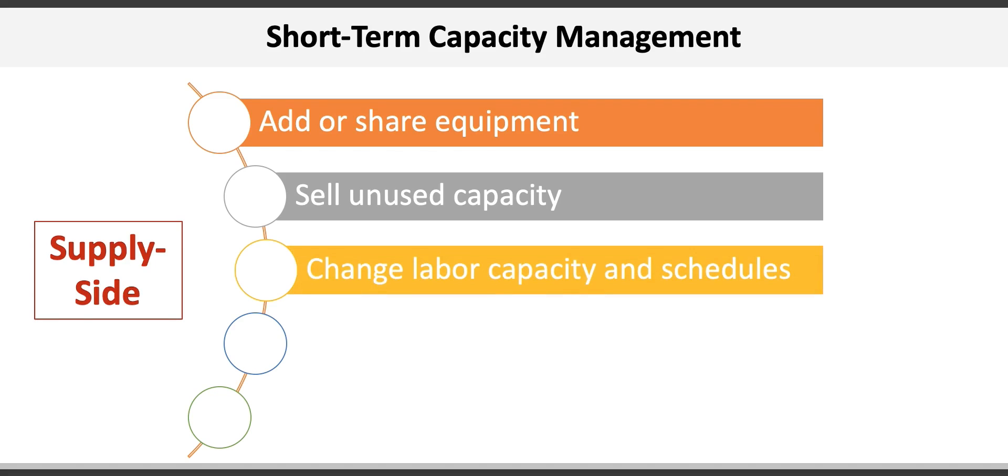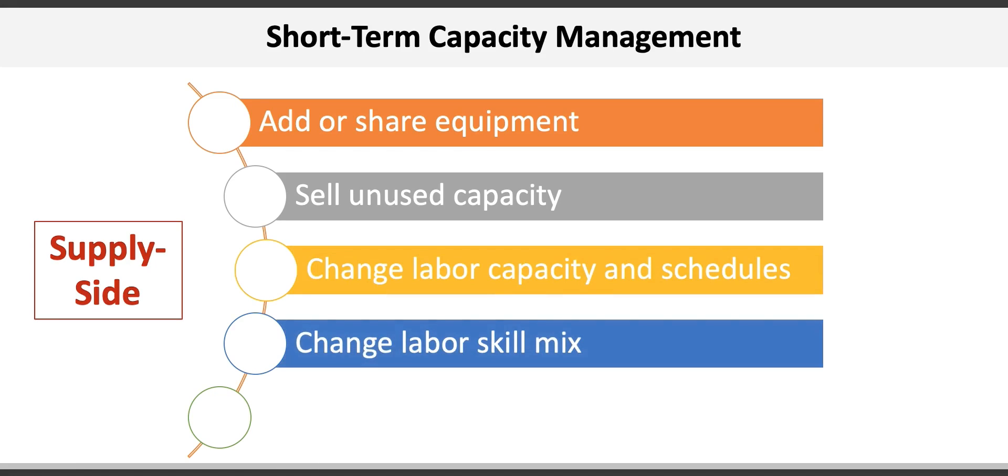A third supply side approach is to change labour capacity and schedules. Fourth is to change the labour mix, which can be accomplished through cross-training.